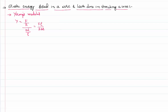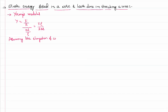We can rearrange these terms to express delta L, the total elongation of the wire under an applied force. Assuming the elongation is some value x, I can write Young's modulus as the external force applied times the length of the wire, divided by area times x, where x is the increase in length of the wire and L is the original length of the wire.